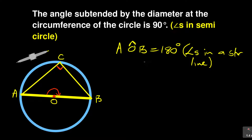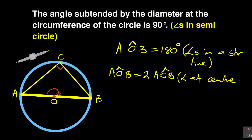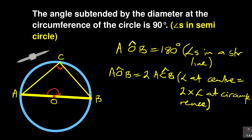Now in the previous theorem — remember — we said the angle at center is equal to two times the angle at the circumference. So now we are saying the angle at the center — in other words, angle A, O, B is equal to two times angle A, C, B. What is the reason? Angle at center is equal to two times angle at circumference. So this is the previous theorem — I think it is theorem number two.